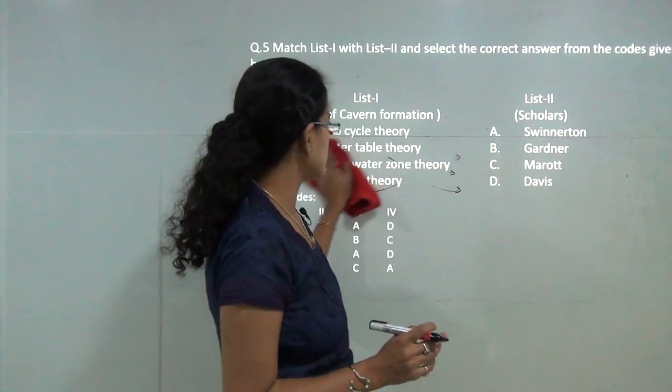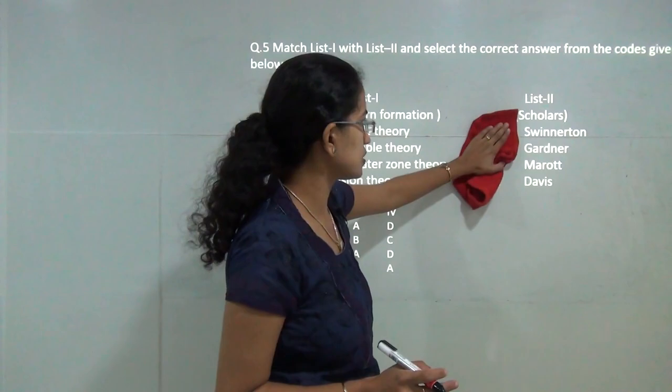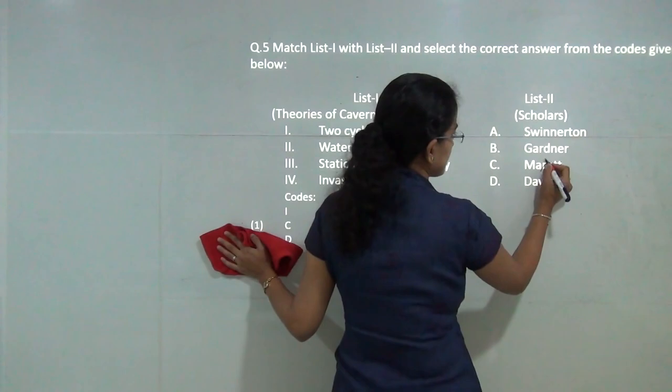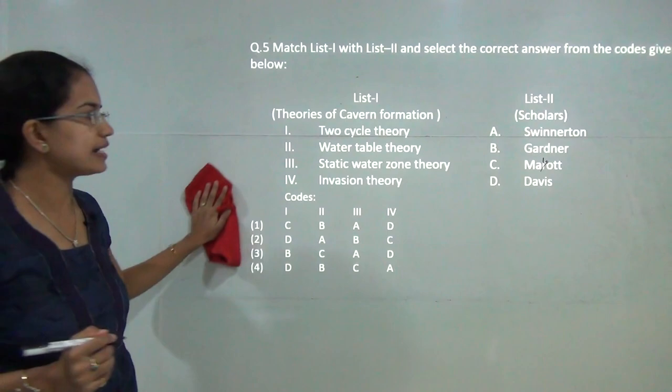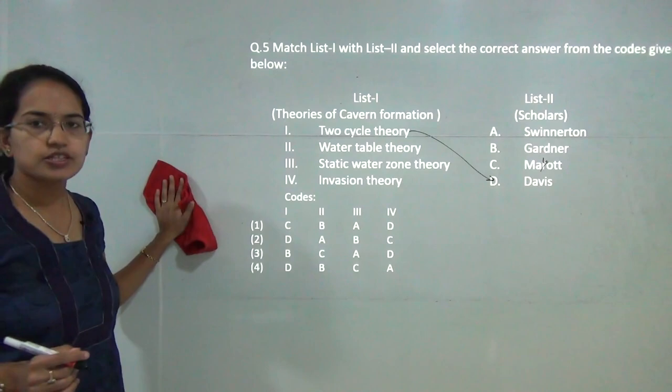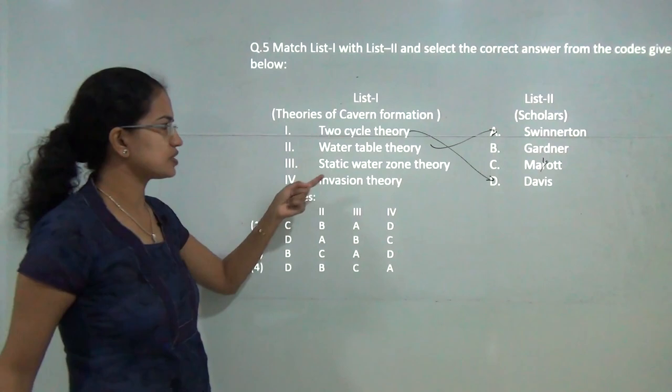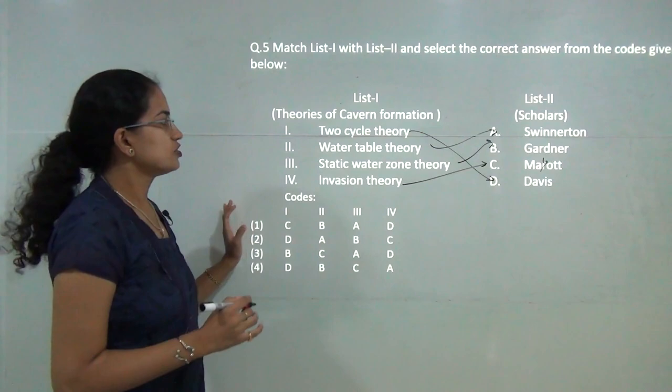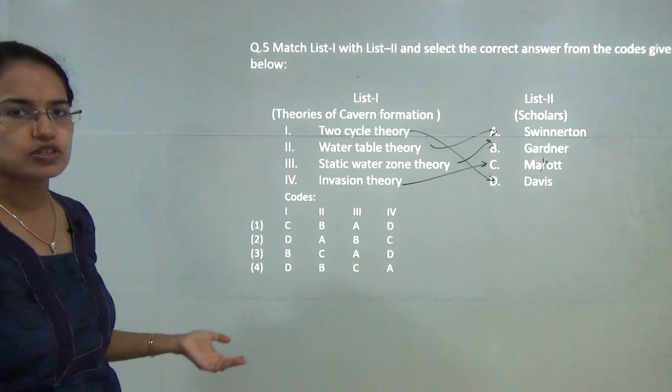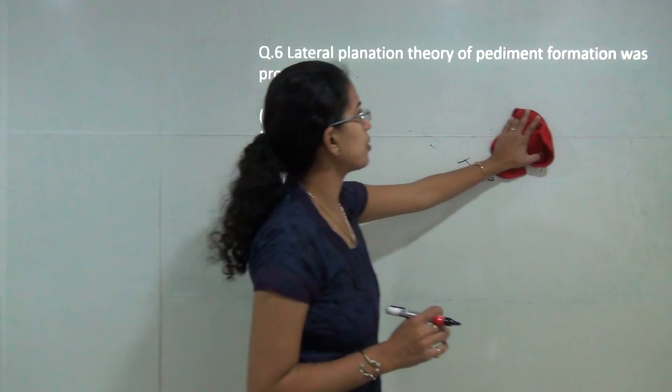Next is you have to match the various theories of karst formation and the scholars. This same question was asked in 2014 and has been repeated again. However, this should be not mallet, it should be Malott. It was the Malott's theory, so two cycle theory was given by Davis. You have water table theory given by Swinnerton, then you have the static water zone theory, Gardner's theory, and finally the invasion theory which was given by Malott. We have covered this in detail in our explanations about the various theories of karst formation so you can refer that.